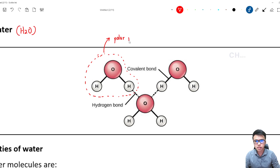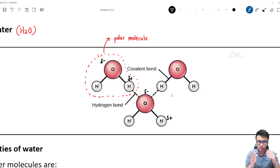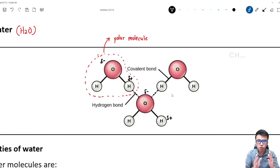I hope you guys still remember what is the meaning of a polar molecule. Polar molecule means the atoms inside the water carry some partial charge. Oxygen carries a partially negative charge, and hydrogen carries a partially positive charge. So same goes to the rest of the molecule. This positive and negative charge, they tend to attract each other. The force that forms between the hydrogen and the oxygen is called the hydrogen bond.